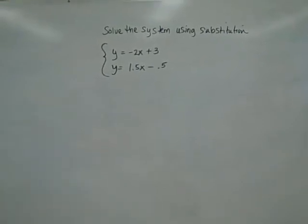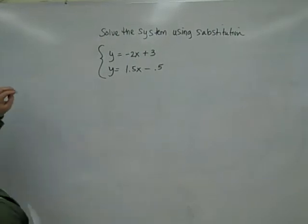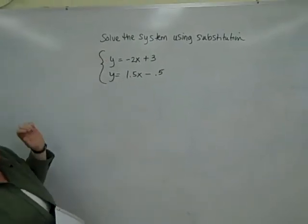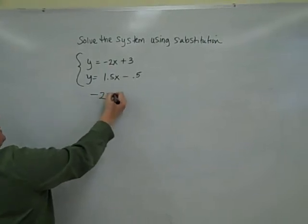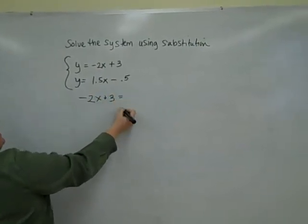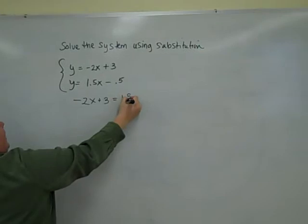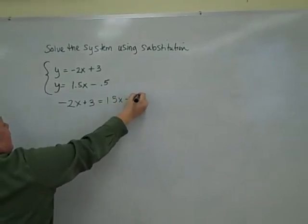Solve the system using substitution. So remember, we talked about the other day that y always equals y. So we can set this up: negative 2x plus 3 is equal to 1 and a half x minus a half.